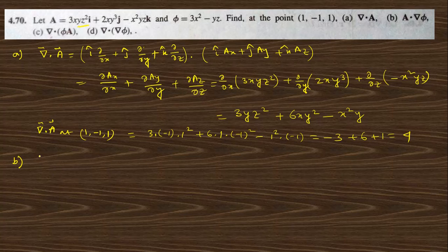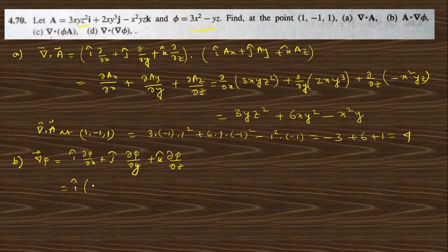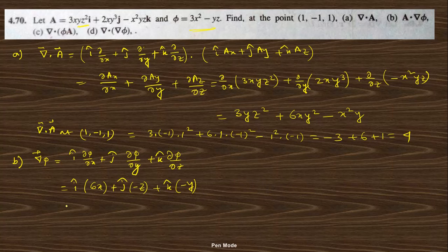Next, find A·grad φ. First compute grad φ: grad φ = i-cap ∂φ/∂x + j-cap ∂φ/∂y + k-cap ∂φ/∂z. With φ = 3x² − yz, ∂φ/∂x = 6x, ∂φ/∂y = −z, ∂φ/∂z = −y. At the point (1, −1, 1): grad φ = 6i-cap − j-cap + (−(−1))k-cap = 6i-cap − j-cap + k-cap.